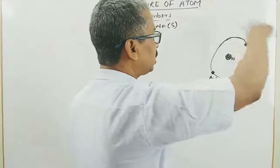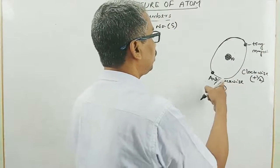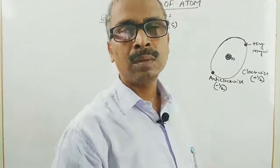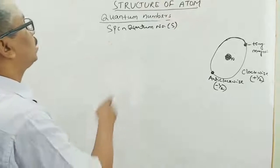Agar samajh kya, agar electron ghoomega hai clockwise toh iska plus half hai spin quantum number. Agar yeh idhar ghoomta hai toh this is minus half spin quantum number. Samajh kya, you can write here...